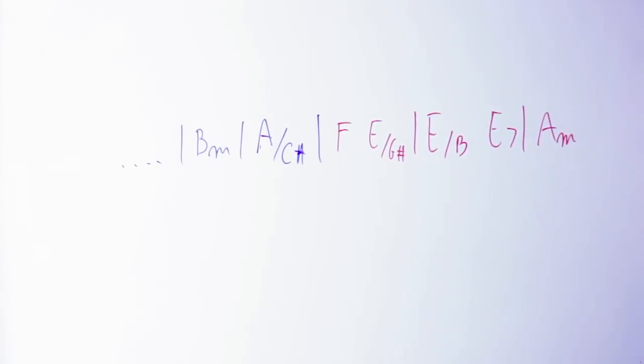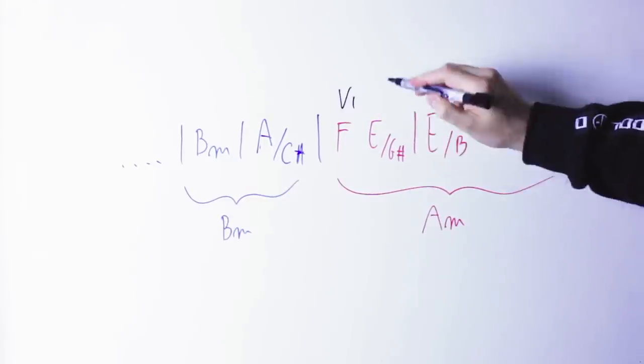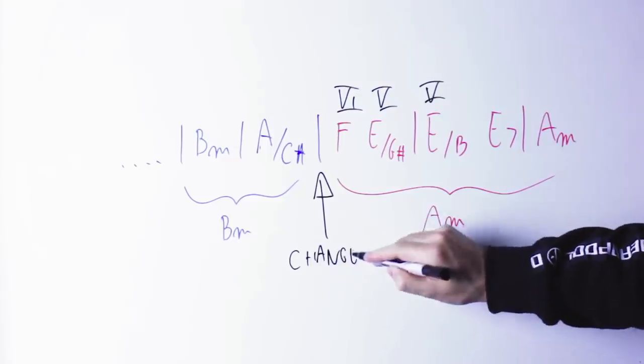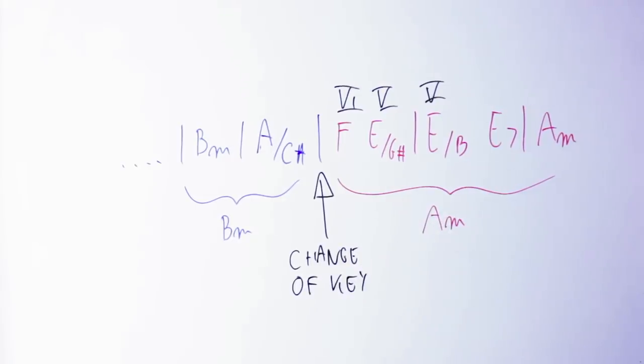This F and this E chord are easy to explain because they are the sixth chord and the fifth chord in the key of A minor, where E, of course, is taken from the A harmonic minor scale. So the modulation here, the change of key, happens between the A chord and the F chord.